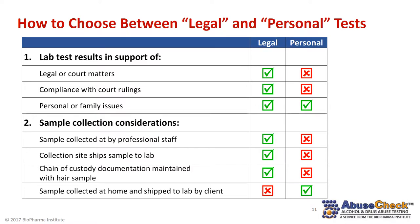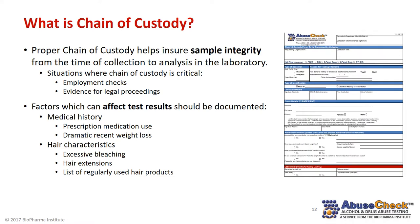How does one decide between hair testing for legal or personal purposes? The legal test is comprehensive in the types of situations the lab results may support. There is a chain of custody process to ensure that the hair sample comes from an individual whose identity has been verified and the hair sample is not subject to tampering anywhere along the testing process. If you have a simple need to assess possible alcohol use or abuse, a personal test may be adequate — you are responsible for the collection of the hair sample and sending it off to the lab, with no authentication of the person providing the sample. Chain of custody and sample integrity is critical for situations such as employment checks or documentation for legal proceedings. It is also important to document any details in a person's medical history or use of hair products which may affect hair test results.